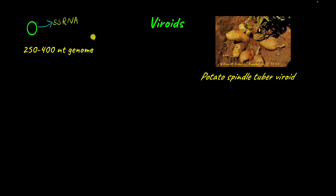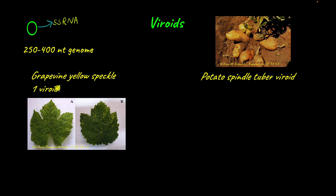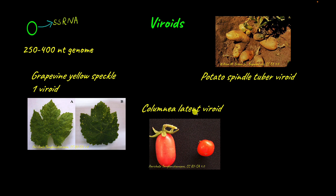Despite their small size, viroids are still of economic importance because they affect a lot of crops. The grapevine yellow speckle 1 viroid affects grapes. The columnia latent viroid affects tomatoes, causing the tomatoes to grow in an abnormal shape.